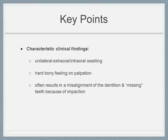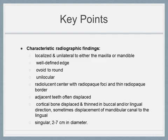Key points include characteristic clinical findings such as unilateral extraoral and intraoral swelling, a hard bony feeling upon palpation, and the lesion often results in malaligned dentition and missing teeth because of impaction. Characteristic radiographic findings include localization unilateral to either the maxilla or mandible, a well-defined edge, an ovoid to round shape, unilocular form, and a radiolucent center with radiopaque foci and a thin radiopaque border.